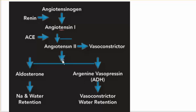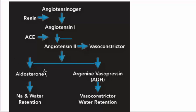Then more cascades occur, and we eventually get aldosterone and vasopressin — or ADH, anti-diuretic hormone. With aldosterone sent out in the body, we get sodium and water retention. With the anti-diuretic hormone, or vasopressin, we get vasoconstriction and water retention.